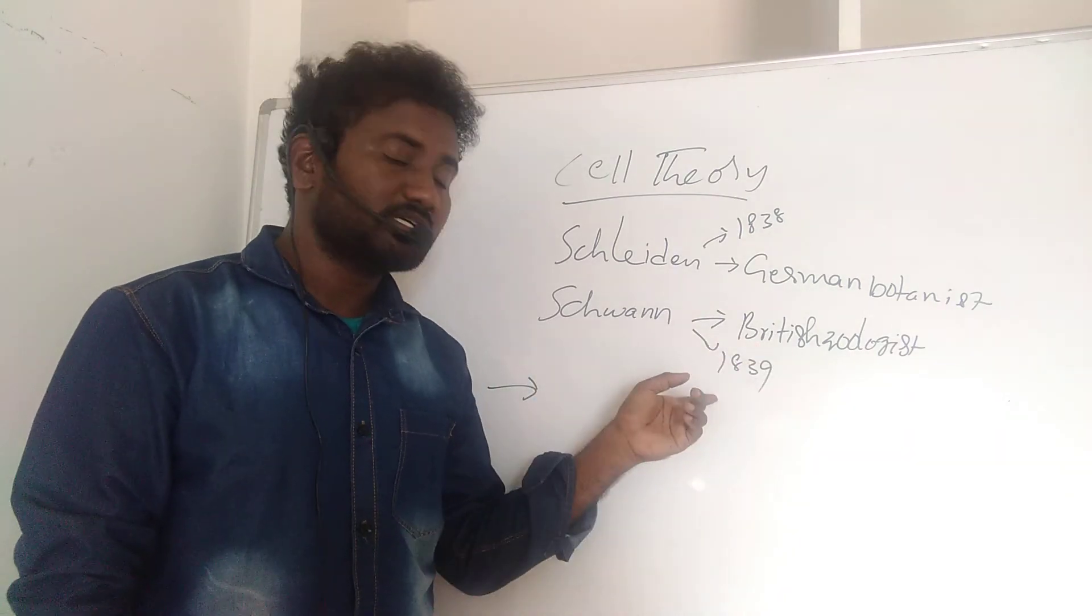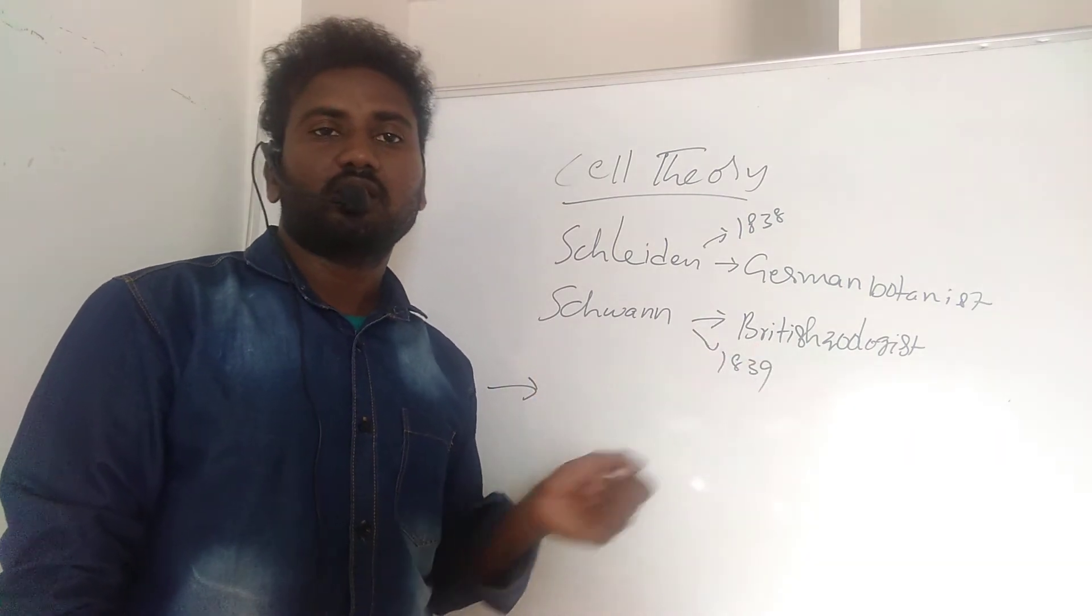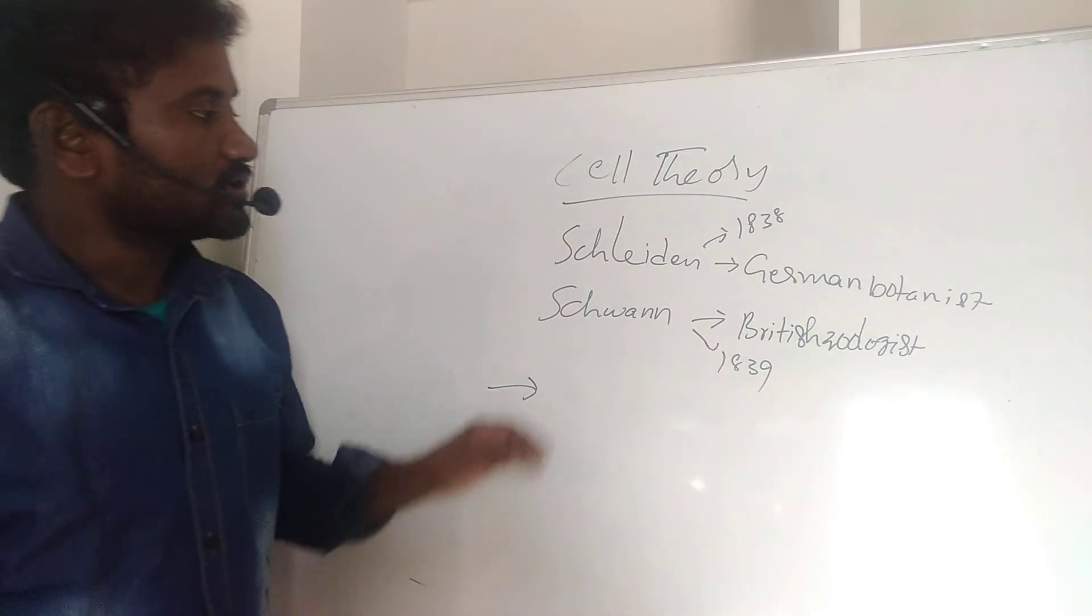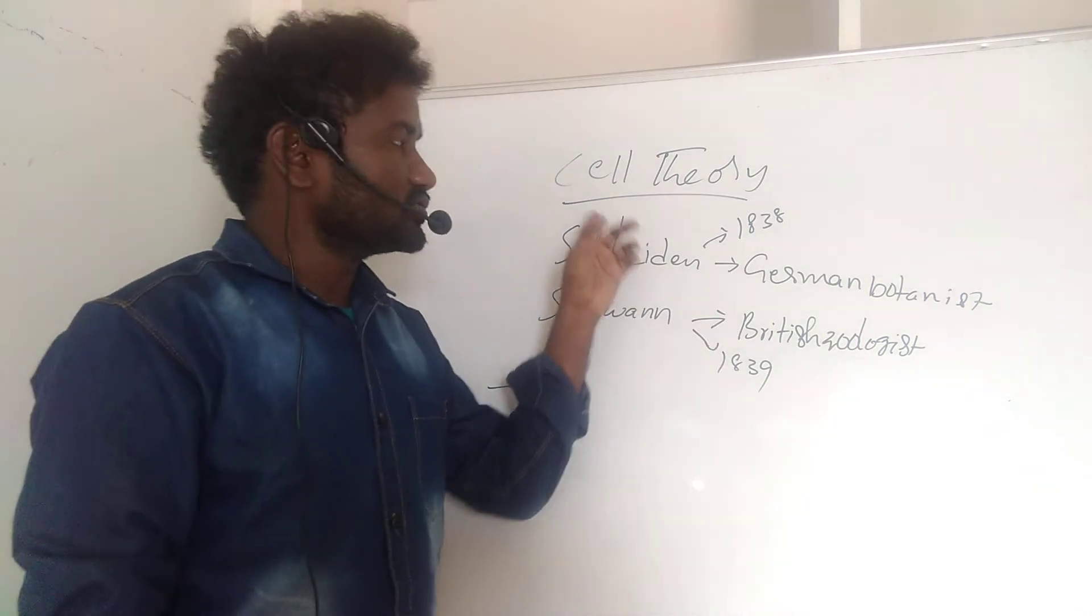Schwann, a British zoologist, studied different kinds of cells and tissues in animals in 1839. Both together proposed cell theory.